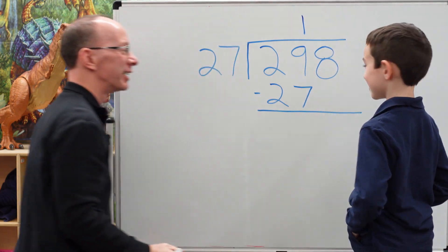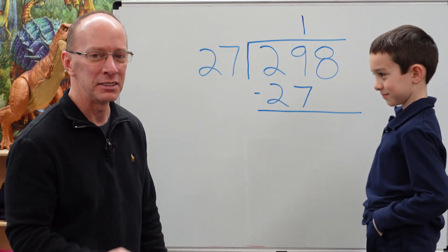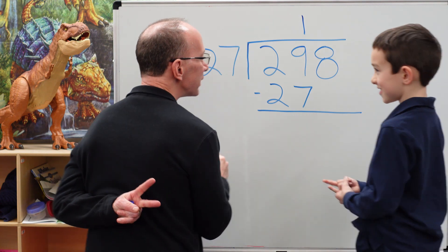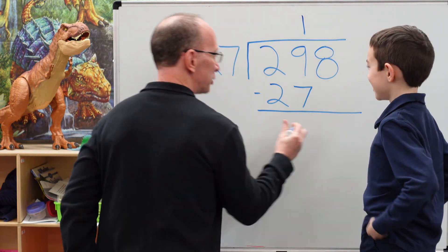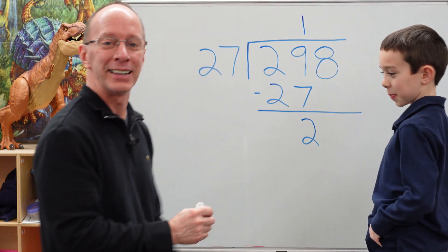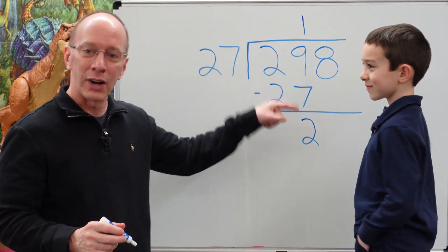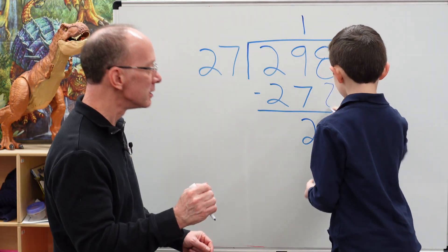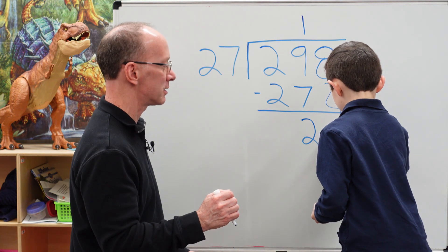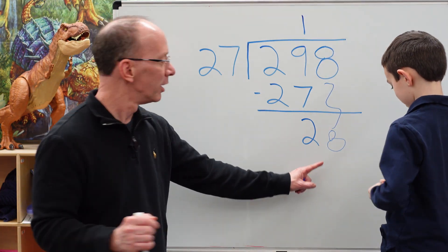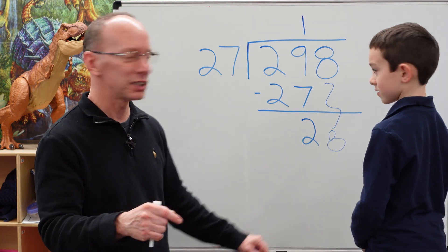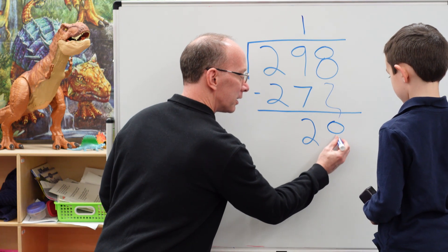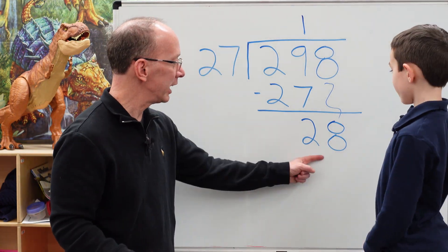And we use subtraction right there. So now we're going to take 9 minus 7. 9 minus 7 is 2. So we put the 2 right there. Now I drop the next number down — we got an 8. I'm going to rewrite that 8 just so that our viewers at home can see that. So here we have 28 now.